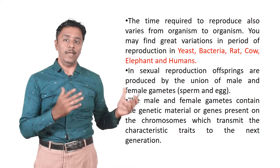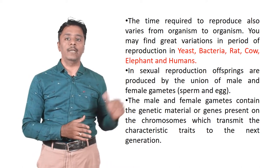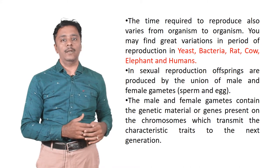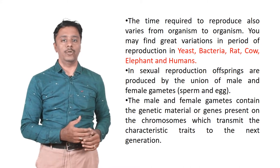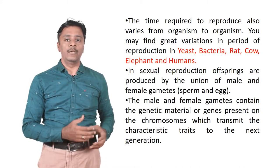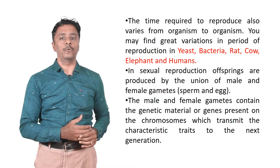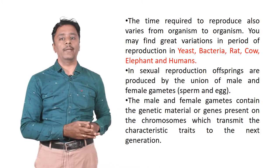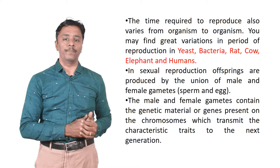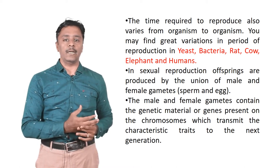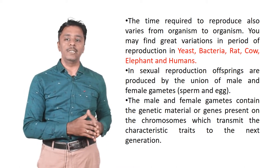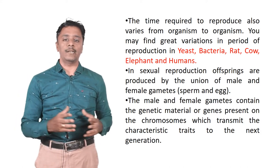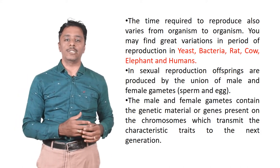The time required to reproduce varies from organism to organism. You may find great variation in the period of reproduction in yeast, bacteria, rat, cow, elephant and humans. In sexual reproduction, offspring are produced by the union of male and female gametes, that is sperm and egg. The male and female gametes contain the genetic material or genes present on the chromosomes which transmit the characteristic traits to the next generation.